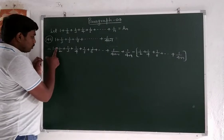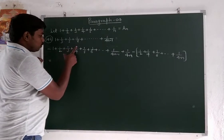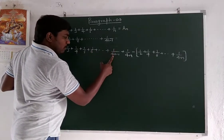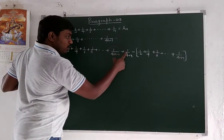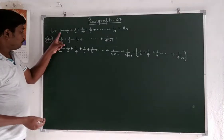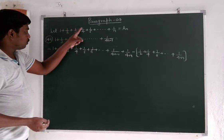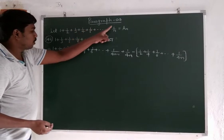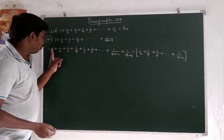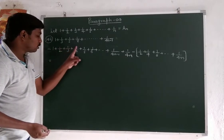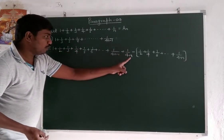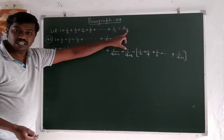First, note here: 1 plus 1 by 2 plus 1 by 3 plus 1 by 4 plus 1 by 5 plus 1 by 6, up to 1 by 4n minus 1, plus 1 over 4n. This is the generalization part. The sum of terms up to 1 over n, so a₄ₙ.